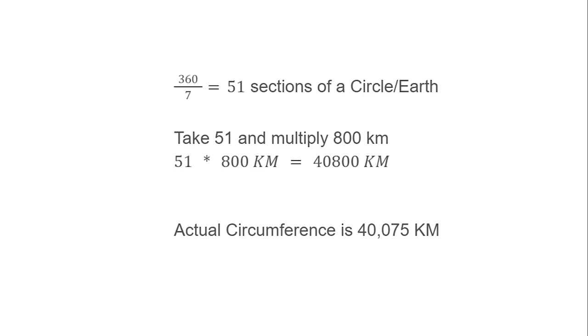Now here's the basic math that he used. He took 360 and divided by 7, which is the degree that we had in the other image, and that equals 51 sections of a circle. And you take that 51 and multiply it by the distance that the guy walked, which was 800 miles. So that would be 51 times 800, and it's roughly around 40,000 kilometers. He was off by like 4 or 5%.